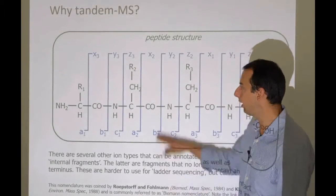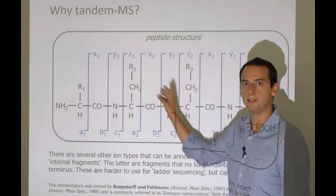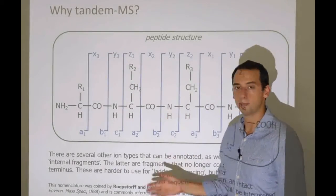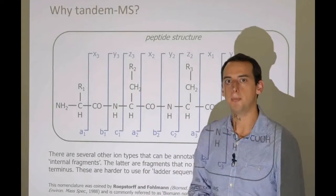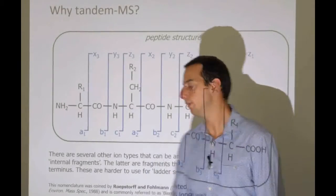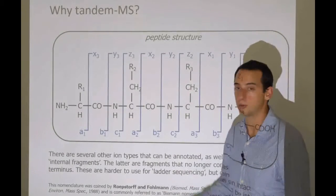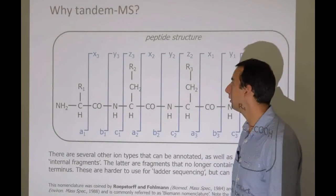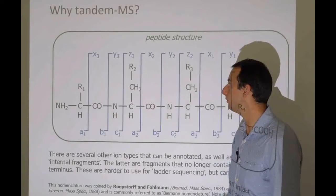The last note is the nomenclature. This particular nomenclature with A, B, C, X, Y, Z is called Biemann nomenclature, but it was originally published by Roepstorff and Fohlman. So we should actually call it Roepstorff nomenclature, but fair enough. History has its way of changing these things, I guess.